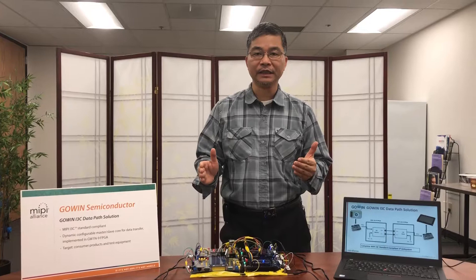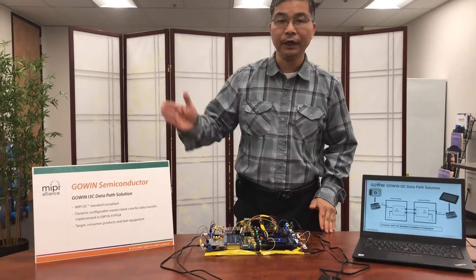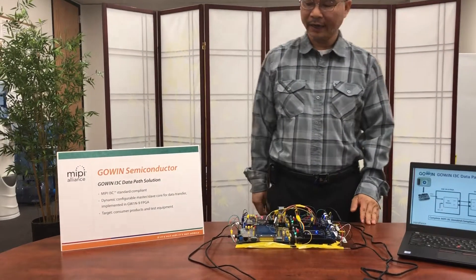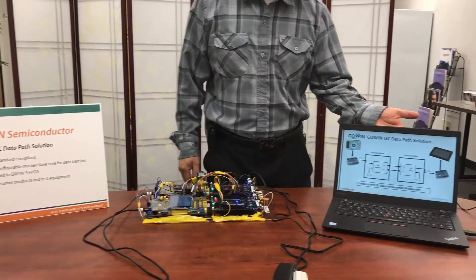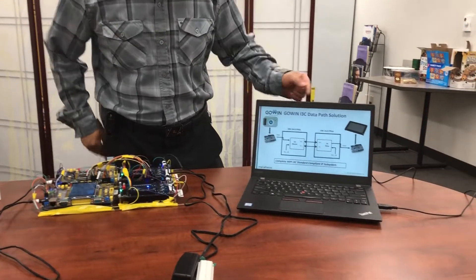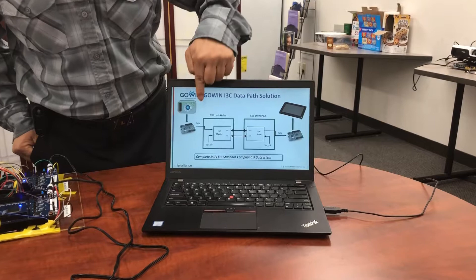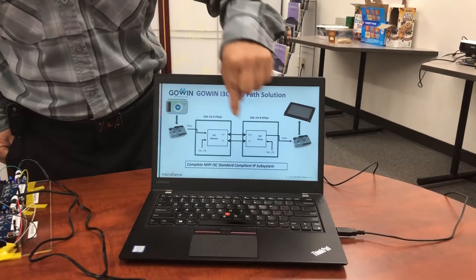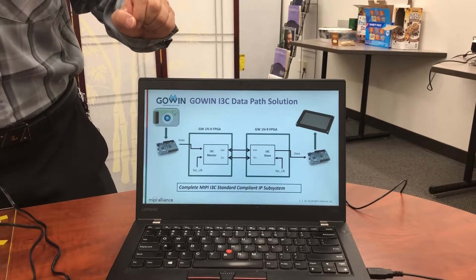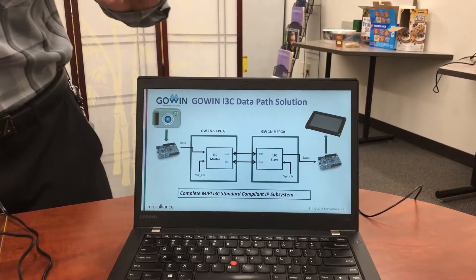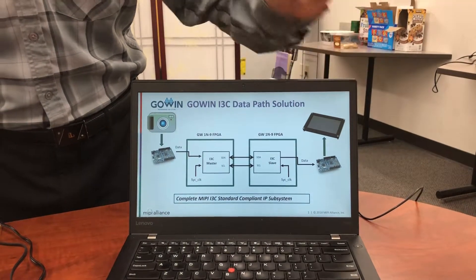The I3C IP designed by Goldwind Semiconductor actually complies with the MIPI standard. On my left hand side, I show you these I3C demo block systems. There are two blocks: one is the I3C master block and another one is the I3C slave block. Besides that, I have two additional blocks which is a third-party purchase camera block and also the LCD panel block.